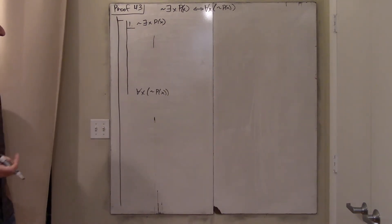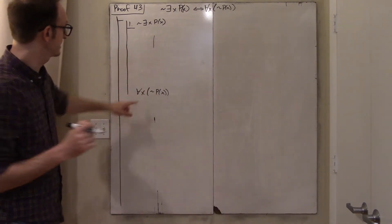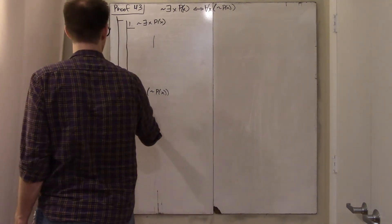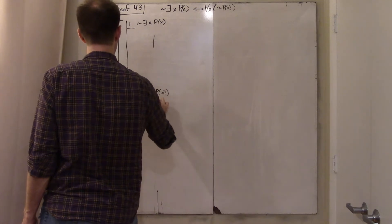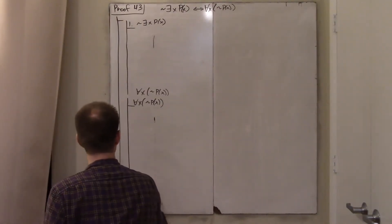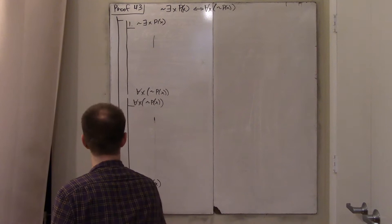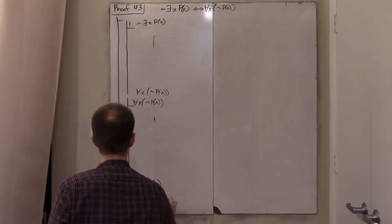I'm going to work from the outside in. I'll also do the reverse direction: assume that everyone doesn't have property P and conclude that it's not the case that there is someone with property P. Let me write that structure in now.